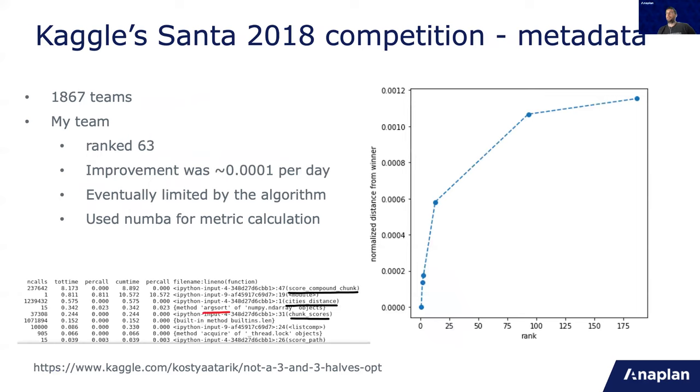So a bit about the Kaggle competition. There were more than 1,800 teams. And my team ranked 63. And you can see here the distance from the winner. So the winner has the best score. And that's the second team, third team, limit for gold, limit for silver, and limit for bronze medal of Kaggle. And the difference between them, the normalized difference is really small. So our improvement was roughly one per 10,000 per day. And it's eventually limited by the algorithm.